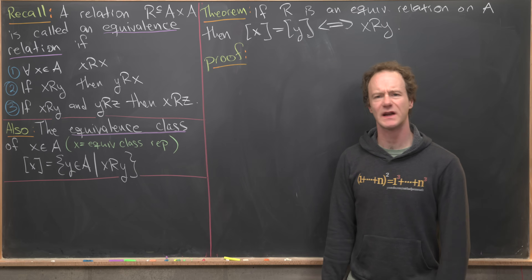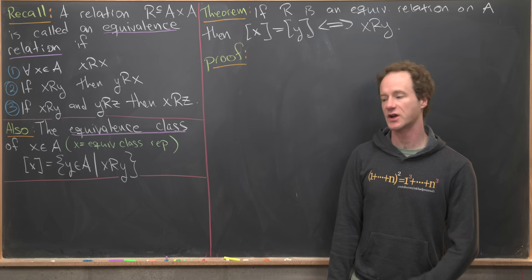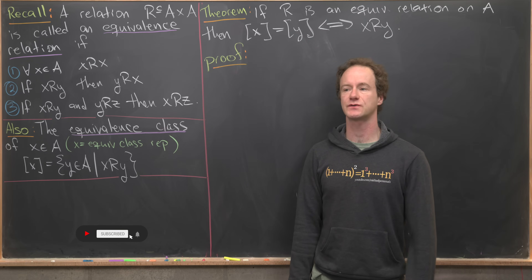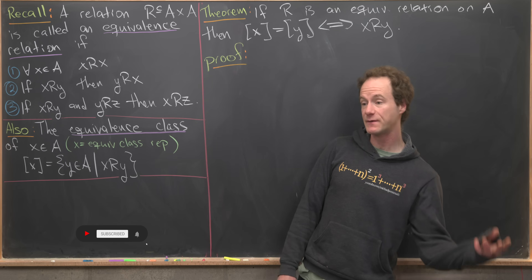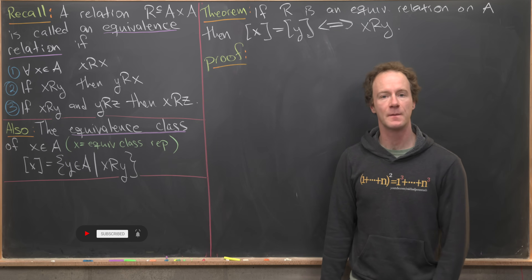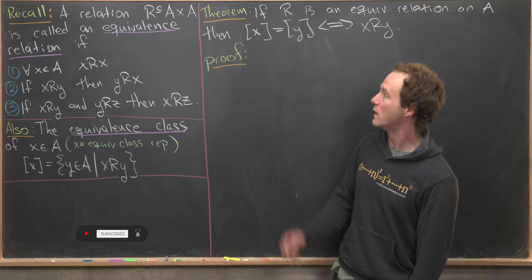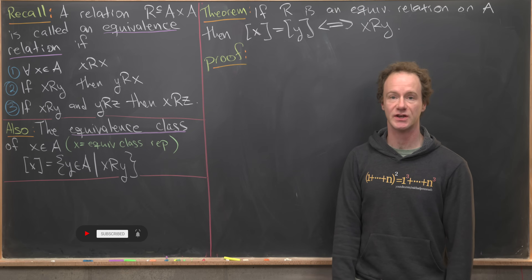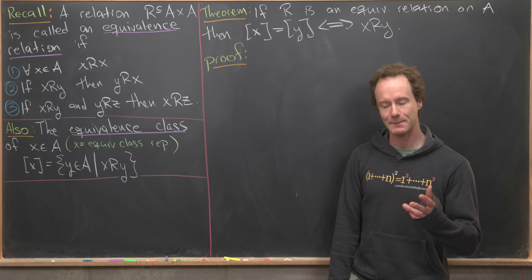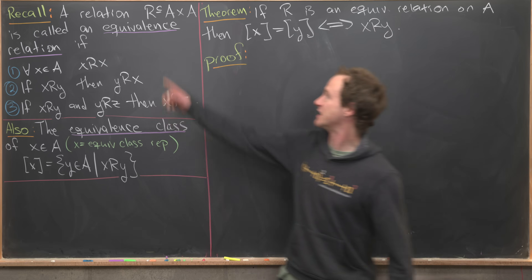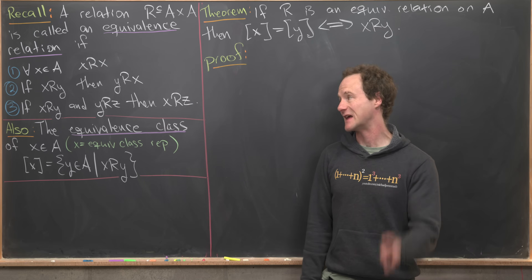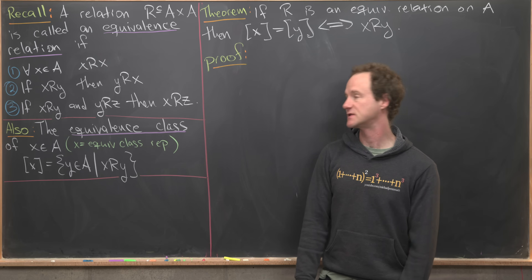This video supports a course in introductory proof writing, looking at equivalence relations across several videos. An equivalence relation is a relation on a set A — by a relation I just mean a subset of A cross A — that satisfies three properties.